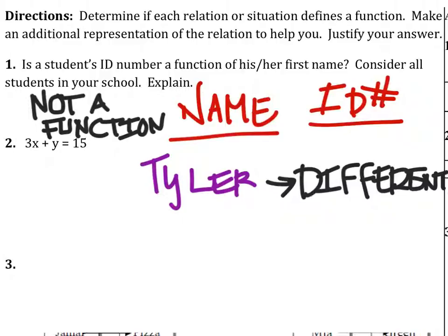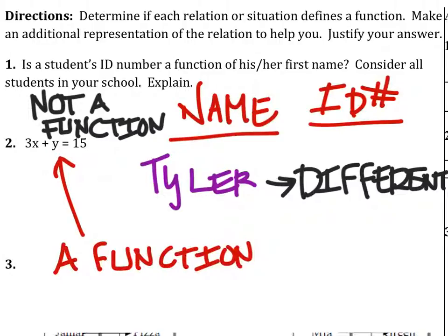Also, this is a linear relationship. This is in standard form. So, number two right here, it is a function. If you ever have a linear function, unless that linear function is a vertical line, then it is a function.